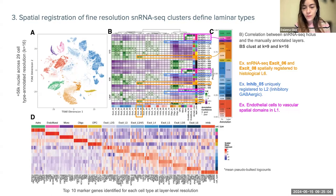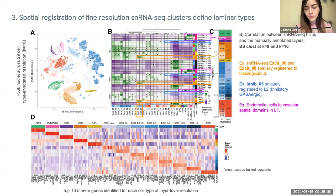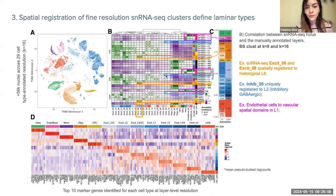All these spatially registered clusters were assigned to the same layer — layer 6 — confirming consistency. The blue square shows an individual GABAergic cluster uniquely assigned to layer 2 across broad, fine, and finest resolutions. A third example shows endothelial/vascular cells assigned to the spatial domain corresponding to layer 1 at broad resolution. When increasing resolution, subpopulations are found within the same layer, so depending on the study goals, one can look at subpopulations assigned at different resolution levels.